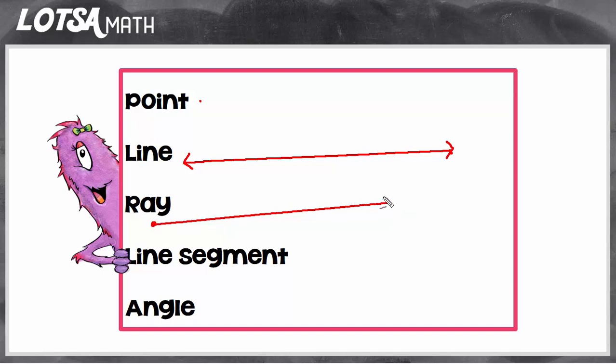Whereas the other end of the ray goes on forever. You can draw a ray that way or you can draw a ray going on forever in the other direction. But all rays have exactly one endpoint and the other side goes on forever.